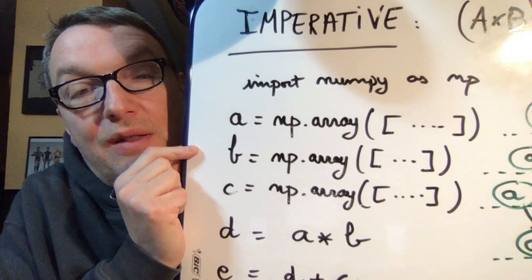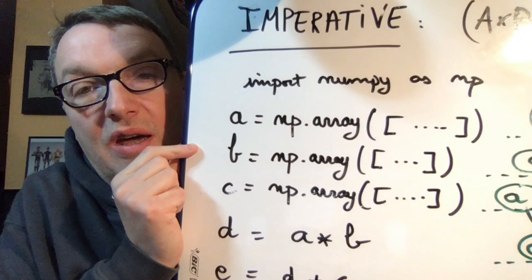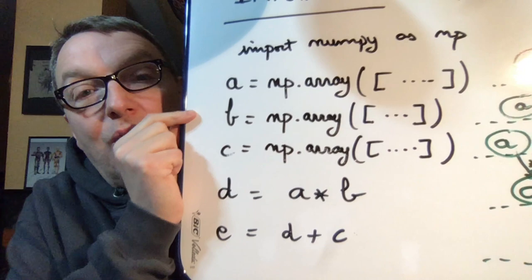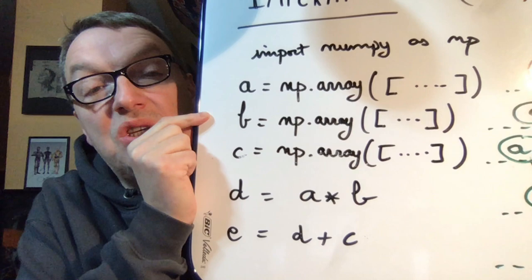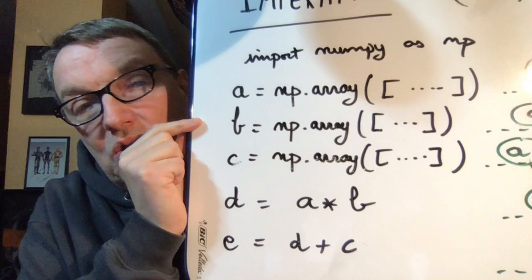And then we would create additional NumPy arrays—one for multiplication, so D is A multiply by B, and E is D plus C—and of course we get our result. Now if we try to look at what's happening, it's really running line by line.